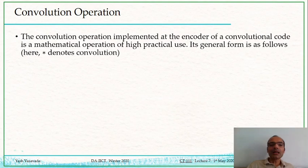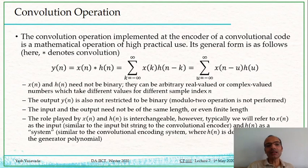Especially this formula here shows just one branch of this encoder. And what this shows is the output of the encoder on any one branch can be given as this mathematical equation, which is the equation of convolution. And that is why this channel coding scheme is called convolution coding.